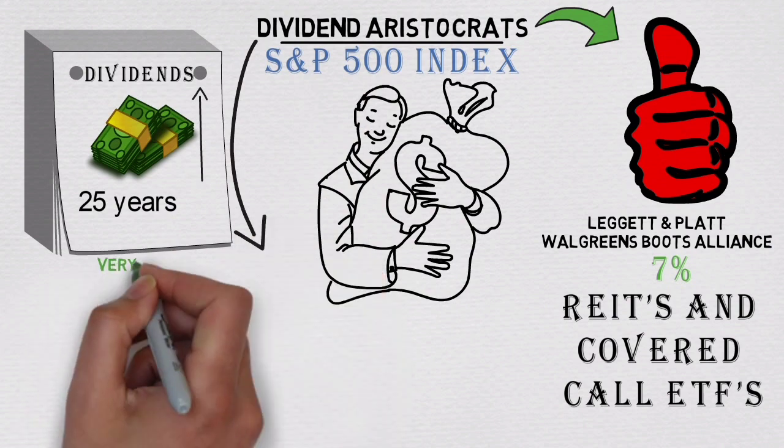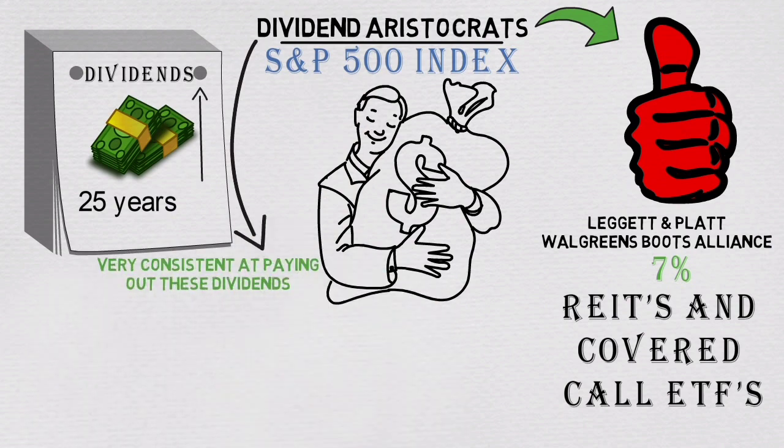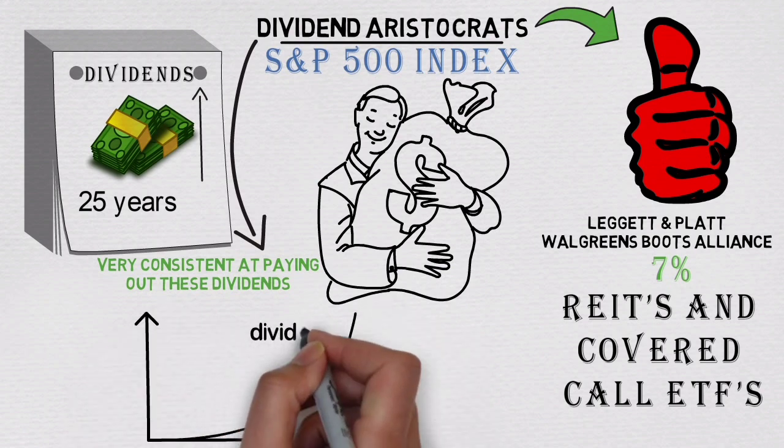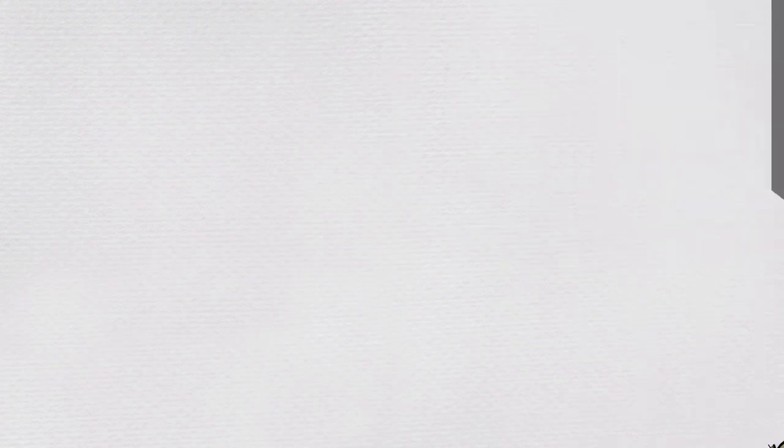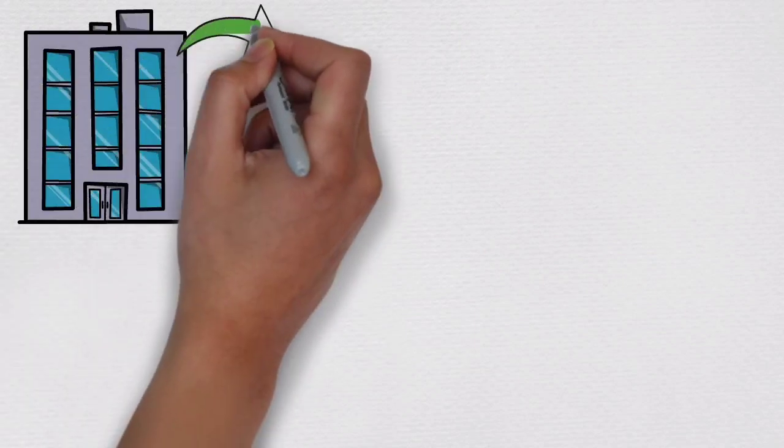these dividend aristocrat stocks are very consistent at paying out these dividends. As well, aristocrat stocks are known for consistently raising dividends every year. Companies which come from this group are from different sectors but they share similar traits.